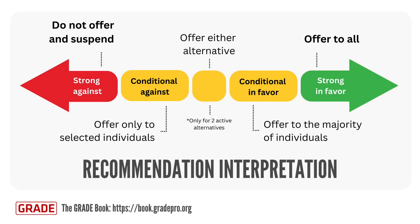GRADE distinguishes between five types of recommendations: strong in favor, strong against, conditional in favor, conditional against, and conditional for either alternative — the last category applying only when comparing two active interventions. Strong recommendations indicate that a clear course of action should be followed for all or nearly all individuals, across all relevant scenarios, with only rare and well-justified exceptions. In contrast, conditional recommendations suggest that one option is preferred for the majority of individuals and situations, but that other choices may be reasonable depending on values or specific circumstances.